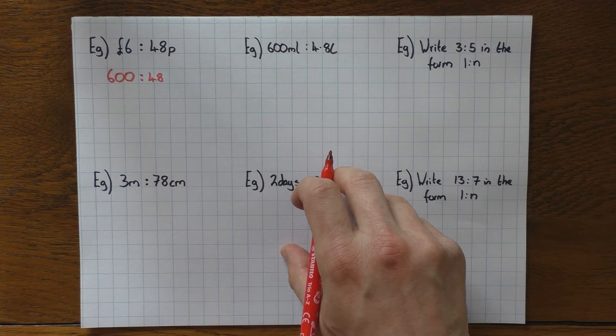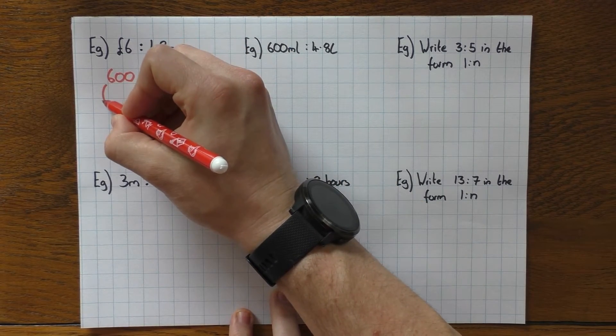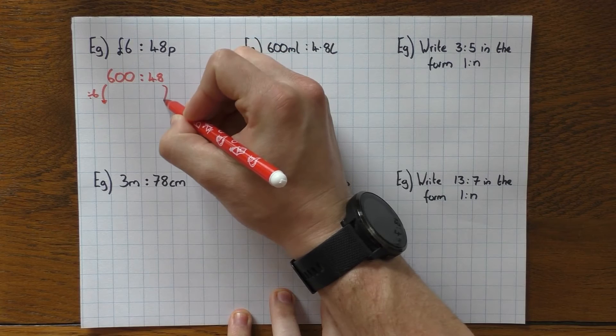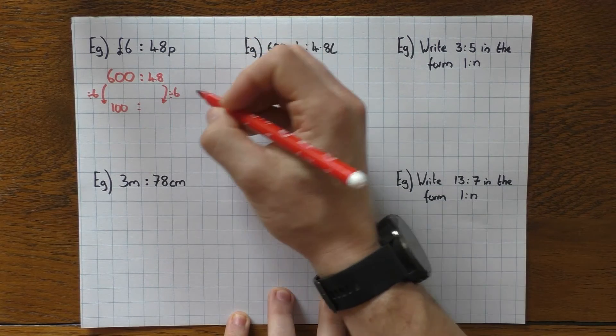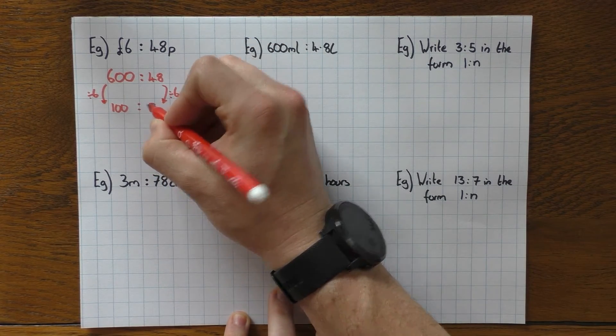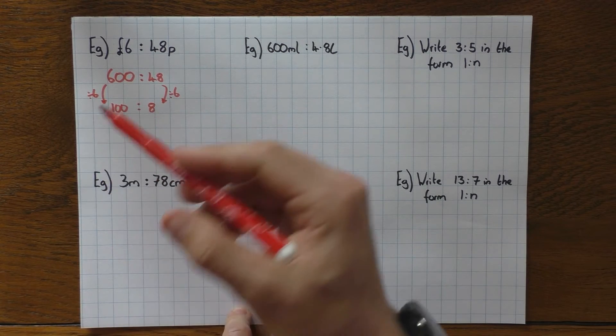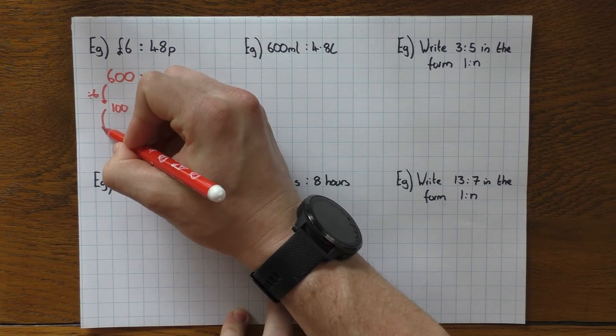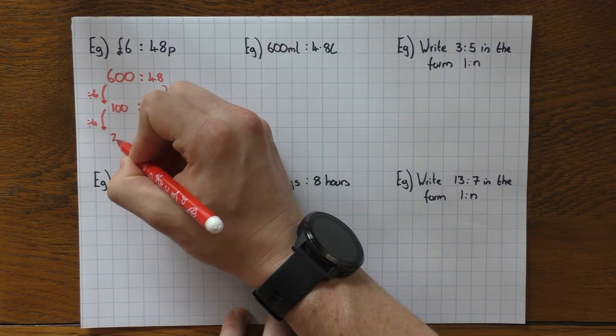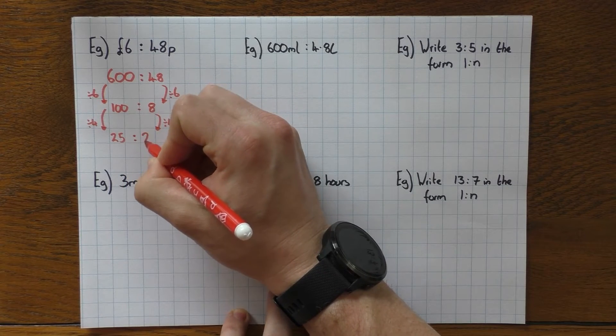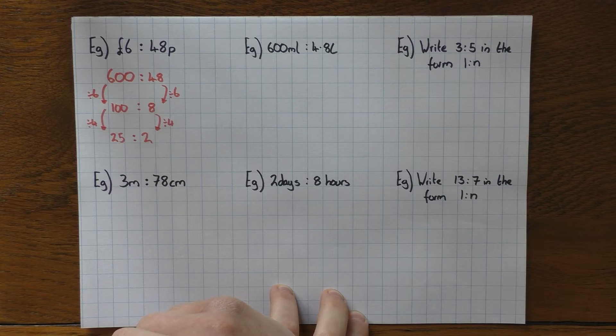So same as we do before, we look at 600 and 48. What number goes into both of those? Well, hopefully you might be able to spot that 6 does. So if I divide both of them by 6, that will leave me with 100. And then 48 divided by 6 leaves me with 8. So the number's got a bit smaller there. Keep going if you can. So 100 and 8, what number goes into both of those? Well, 4 does. So I can divide both of them by 4, which leaves me with 25 to 2. Can I go any further? No, I can't because 2 won't go into 25. So I have to leave it there. So that's my simplified ratio.